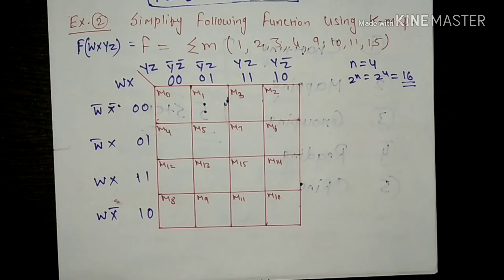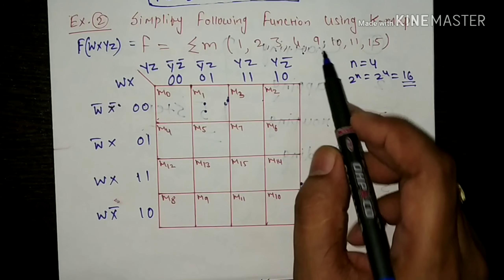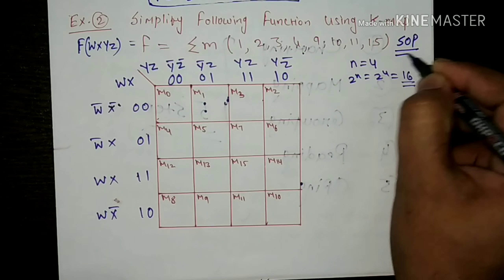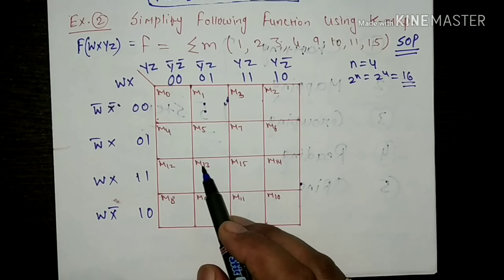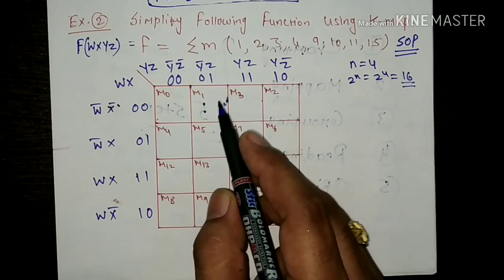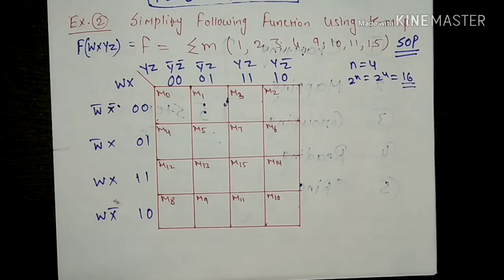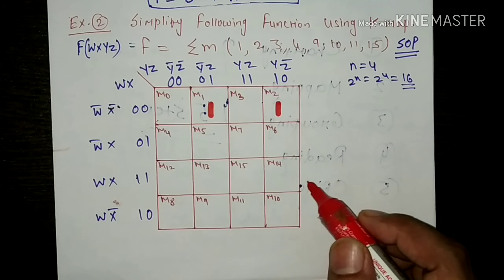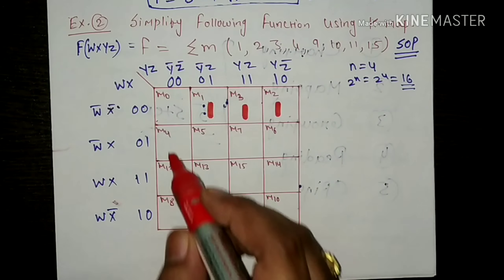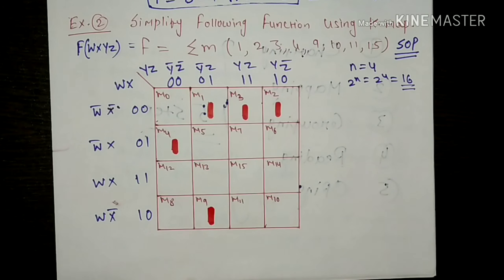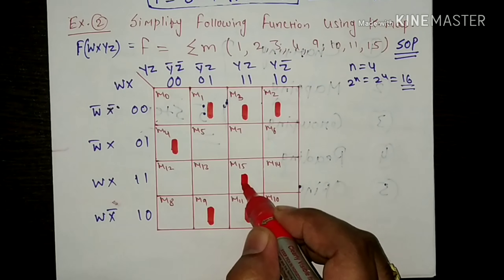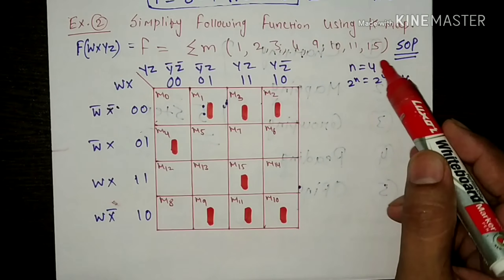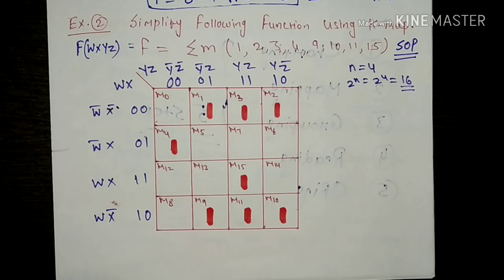This is the first step. Now the second step is to map the function into the KMAP - जो given MinTerms हैं उनको उनके corresponding cells में map करना है. The function is in SOP form, sum of product form. That means given MinTerms की place पर उनके cell में 1 put करना है. So MinTerm No.1 की location यहाँ है, 1 is put here. Then MinTerm No.2 - 1 here, MinTerm No.3, MinTerm No.4, then 9, 10, 11, and 15. This is the mapping process, the second step of KMAP - map the function into the KMAP by putting 1 in corresponding cells for the sum of product function.